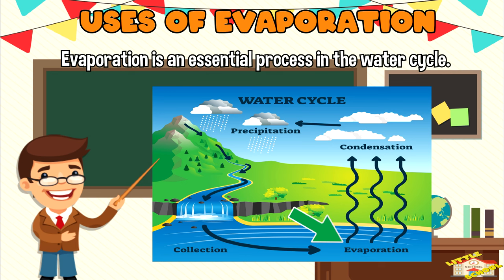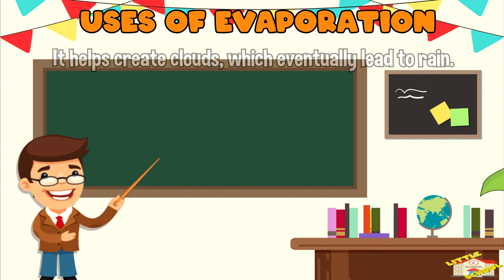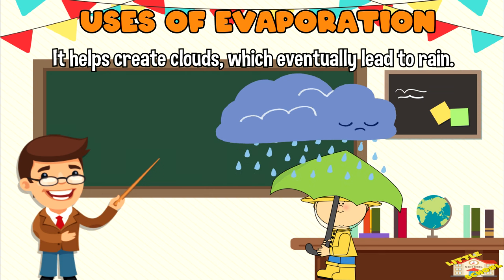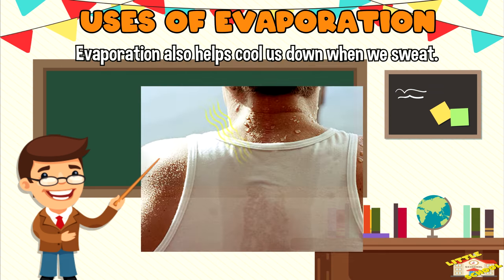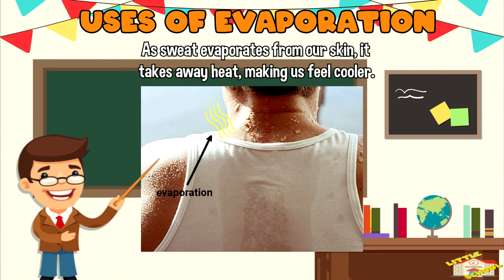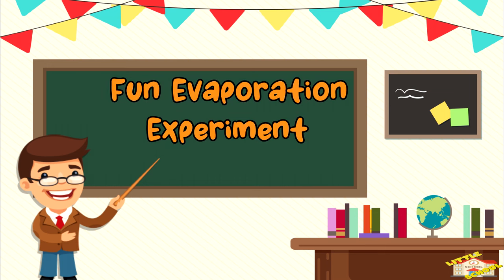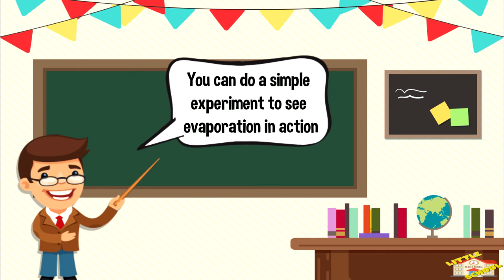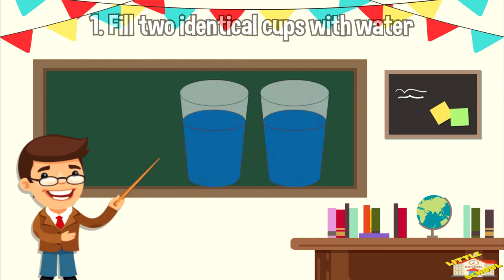Evaporation is an essential process in the water cycle, where water moves from the earth's surface to the atmosphere and back again. It helps create clouds, which eventually lead to rain. Evaporation also helps cool us down when we sweat — as sweat evaporates from our skin, it takes away heat, making us feel cooler.